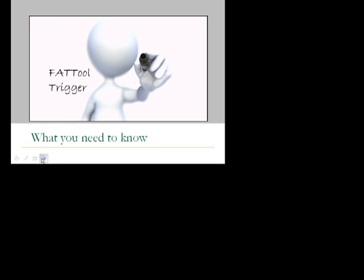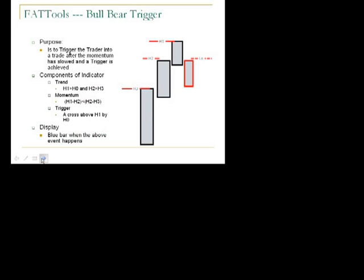The next thing we're going to cover is the Fat Tools Blue Bull Bear Trigger. The purpose of this tool is to trigger into a trade when the momentum has slowed and the trigger is achieved. If you look from H3 to H2, from H2 to H1, it slowed down, and then we take out the low of this bar. It displays blue if it's a bullish event, red if it's a bearish event.